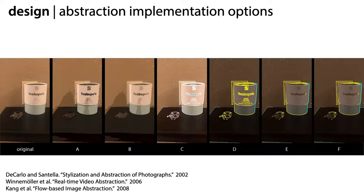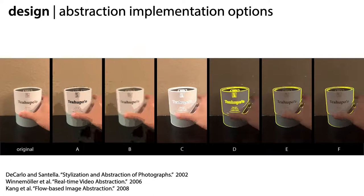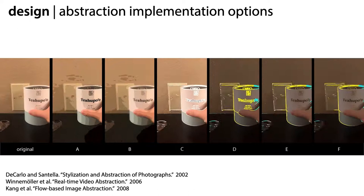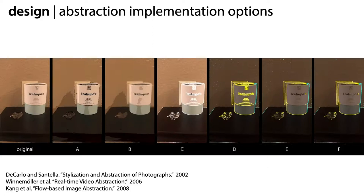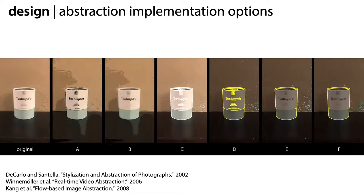Here you see a subset of these overlay designs applied to the video on the left. I don't have time to describe them in detail here, but inspired by existing work on image abstraction, we incorporated elements of flattening the colors, edge detection, and darkening of the image. Given these overlay options, we conducted an online survey with 29 participants to better understand which elements were helpful for recognizing clutter in order to determine the design of our final overlay.